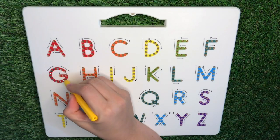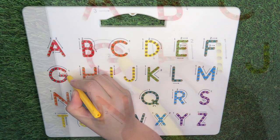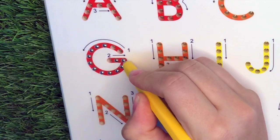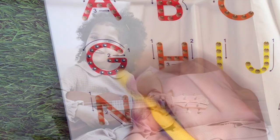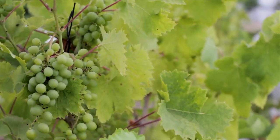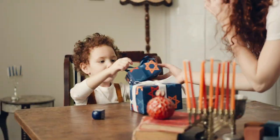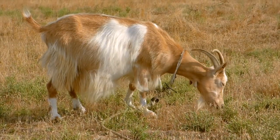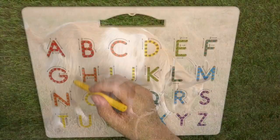Next letter, G. Pull back, around, and across. G is for guitar, grape, gift, and goat.